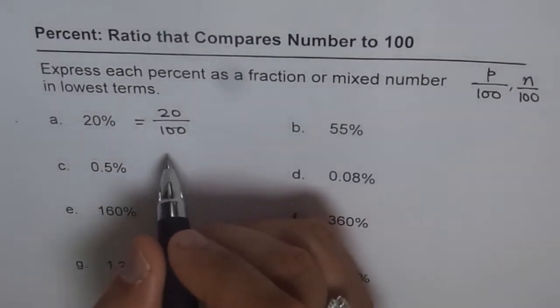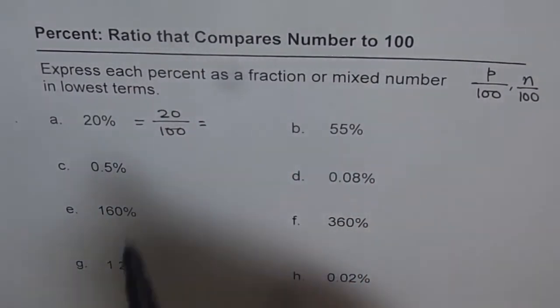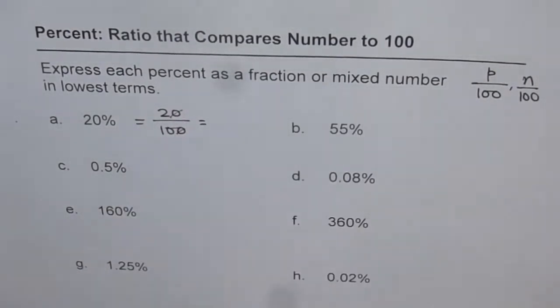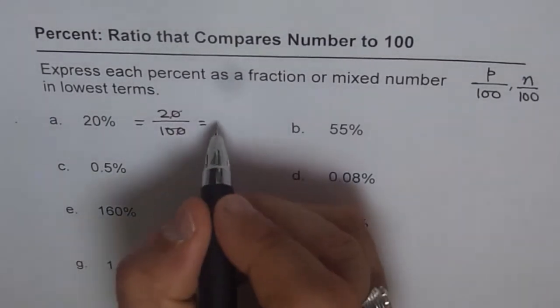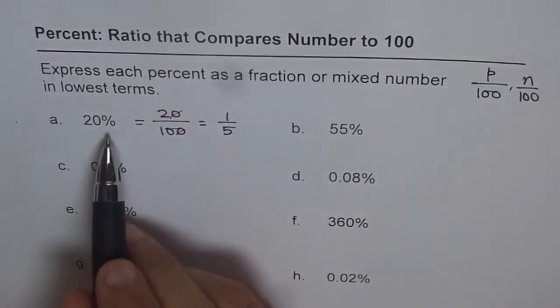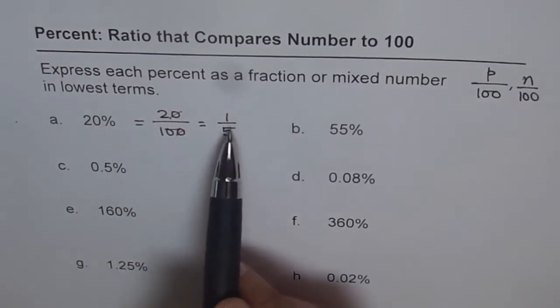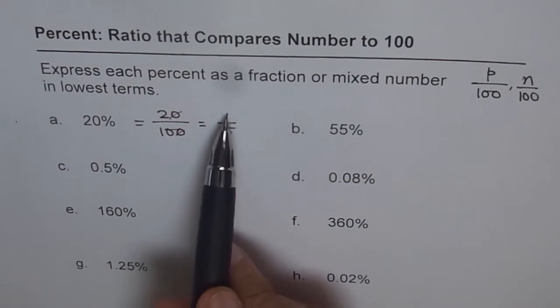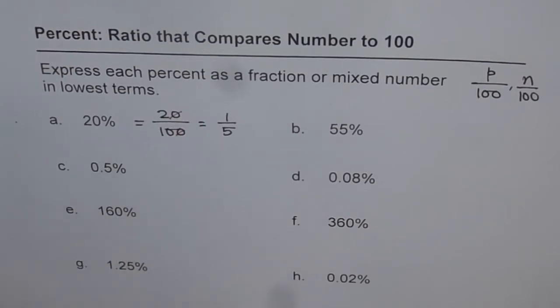So we have 20 over 100. To solve this, you can divide both numerator and denominator by 10. So that is the first thing. When you do that, then you basically cancel out. So when you divide by 10, you get 2 over 10. Now you see 2 and 10, both are even. So you can divide both by 2. So if you divide by 2, 2 divided by 2 is 1, and 10 divided by 2 is 5. So you get 1 over 5.